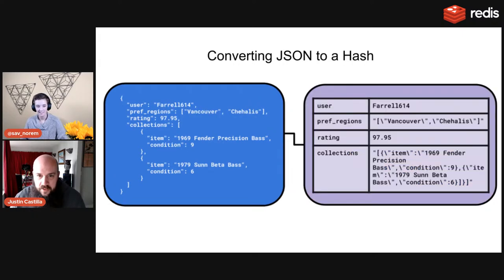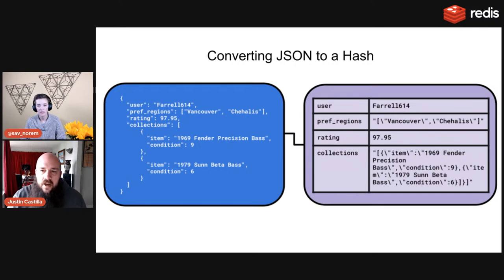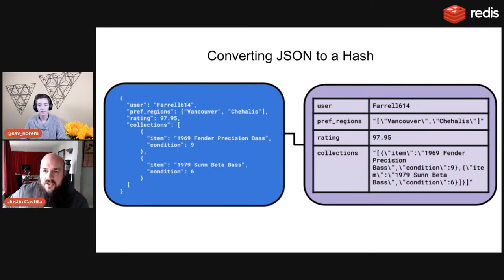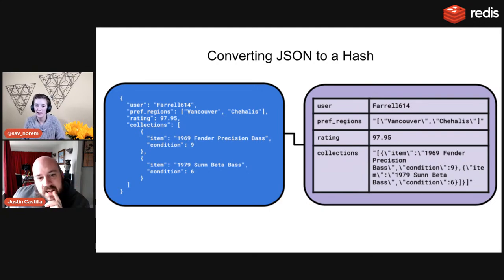Enter the hash. A hash is basically an object with fields and values. You can see here I have fields: user, pref_regions, rating, collections — and the values are all serialized strings. I can update the rating directly by calling HINCRBY or HDECRBY. Actually, there is no HDECRBY — for sorted sets you just increment by a negative number.